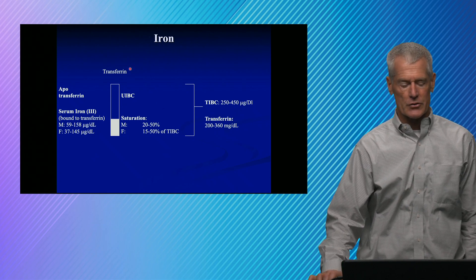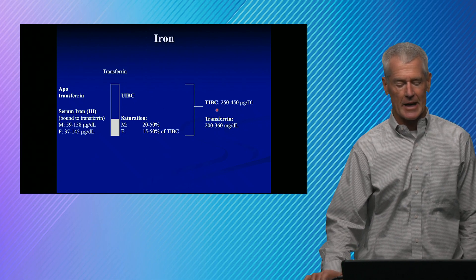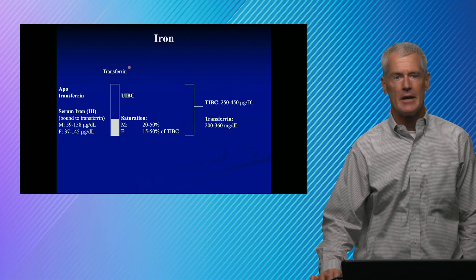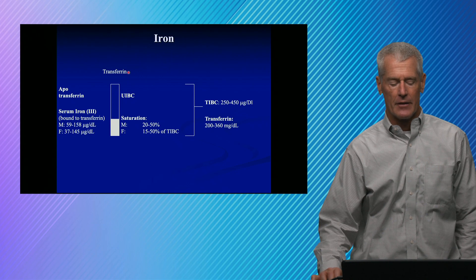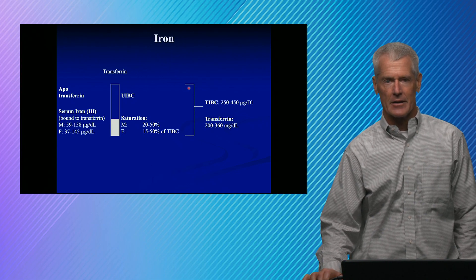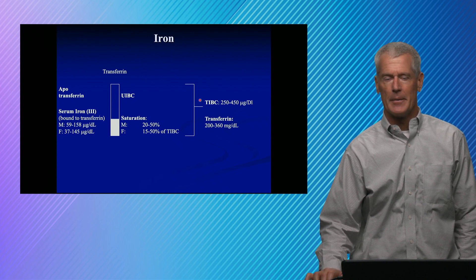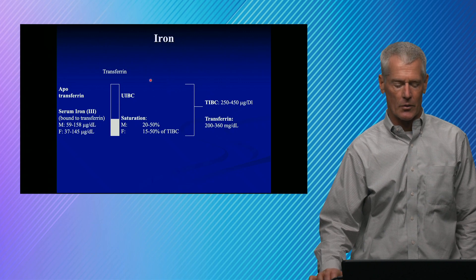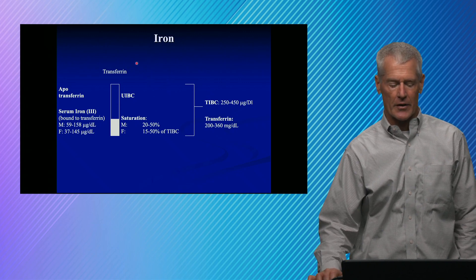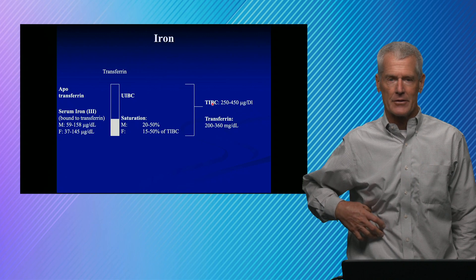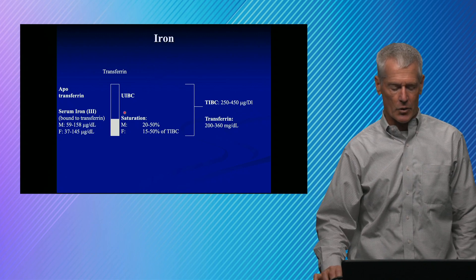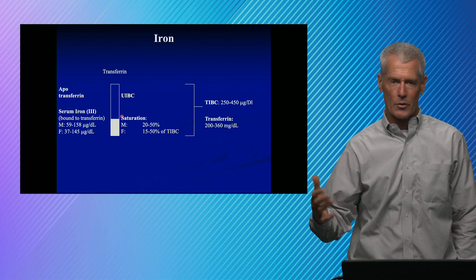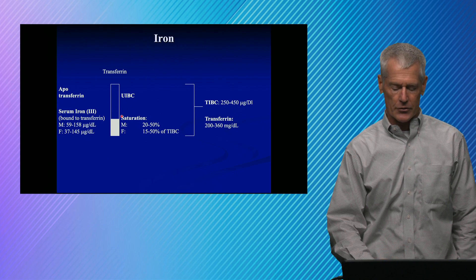Transferrin and TIBC are related — TIBC is determined by transferrin. If you know transferrin, you can calculate TIBC, and if you know TIBC, you can calculate transferrin. We typically measure either transferrin or total iron binding capacity. A normal person has about 20 percent saturation, a normal TIBC, and a normal serum iron.